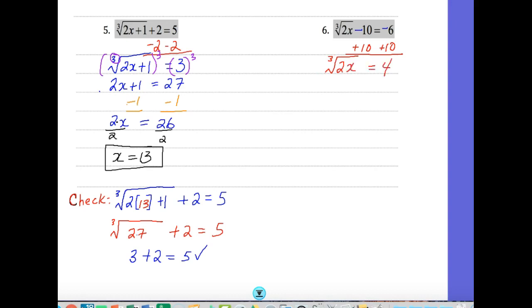To undo a cube root, we cube both sides. So you're going to cube that side, cube the 4. We're going to be left with 2x equals 64. Now divide each side by 2. x equals 32.